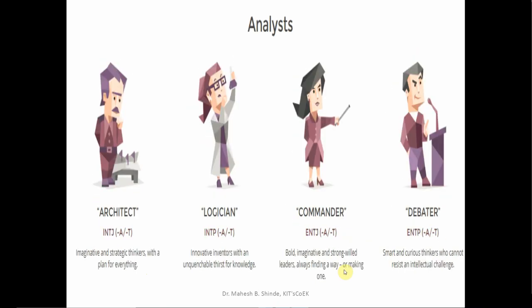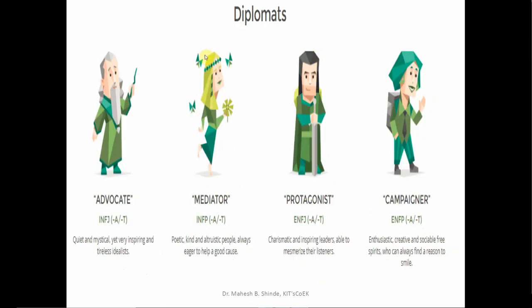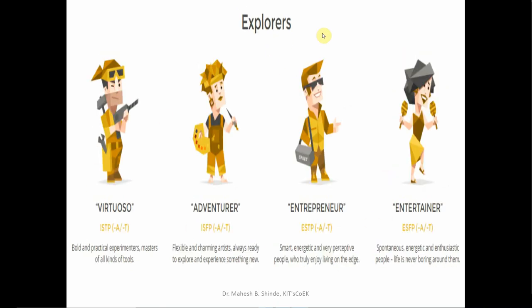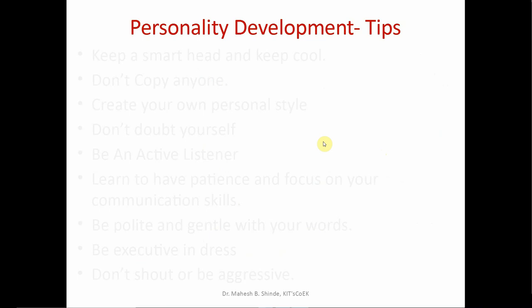The 16 personality types are grouped into four categories: analysts, diplomats, sentinels, and explorers. If you have got any of the relevant combinations you will fall into one of these categories, and the corresponding personality characteristics are expected in you. Now having understood the types, let us see the tips to develop our personality.